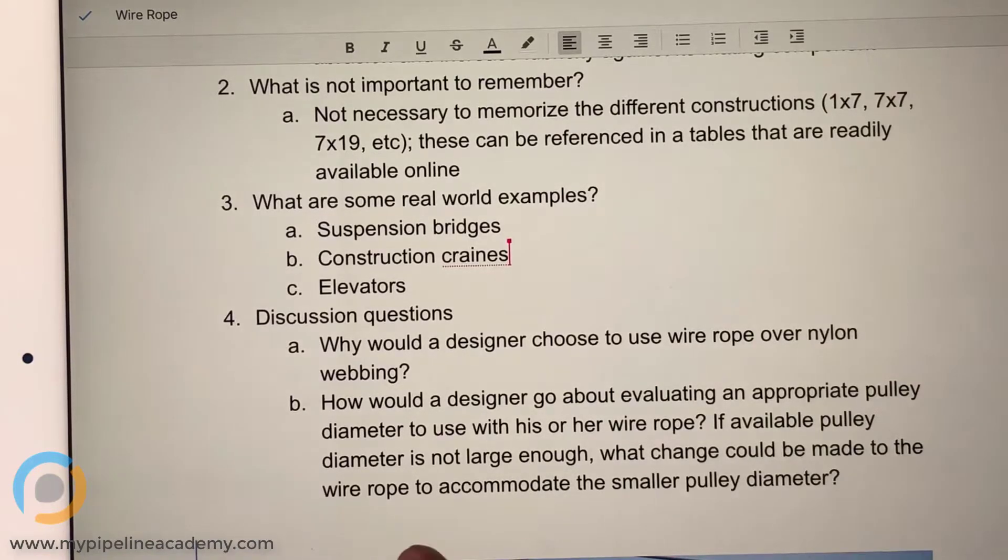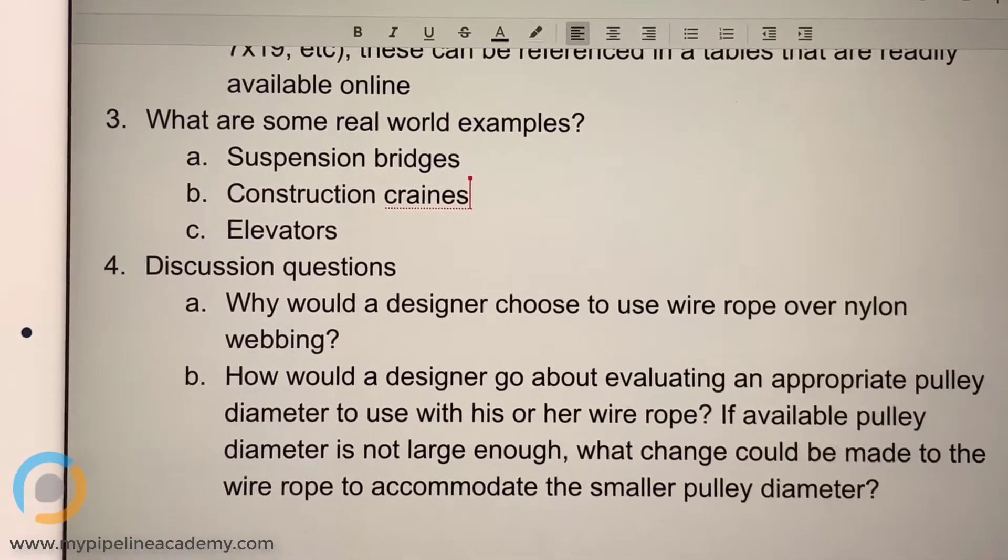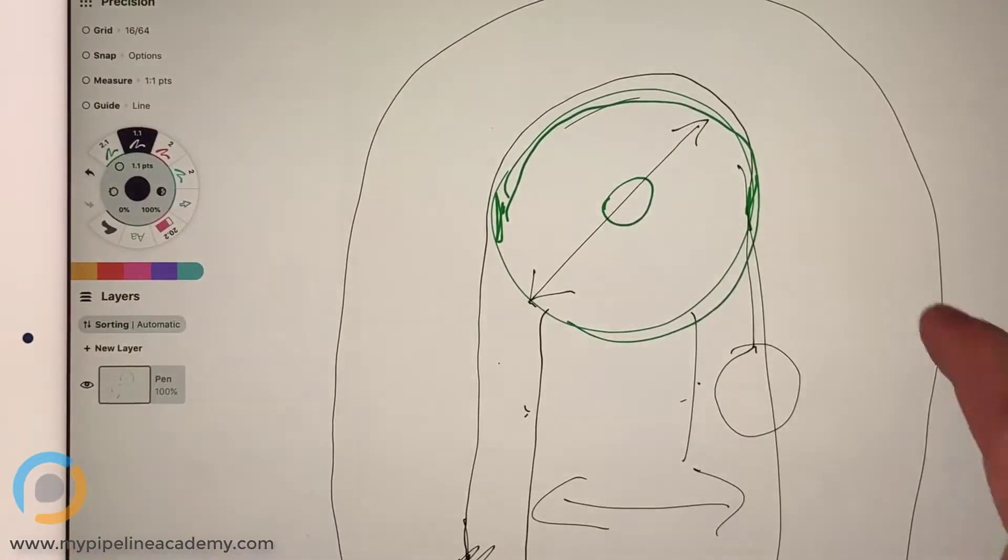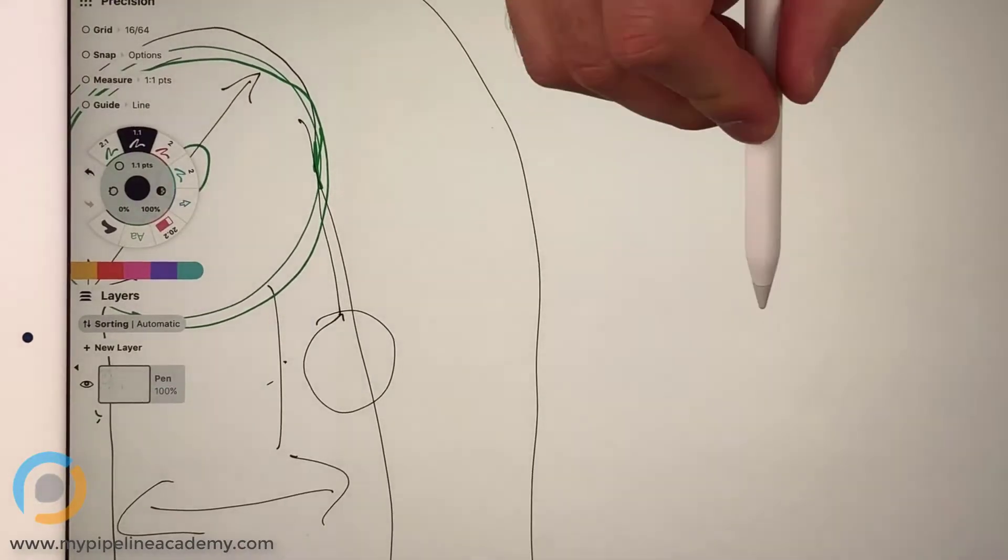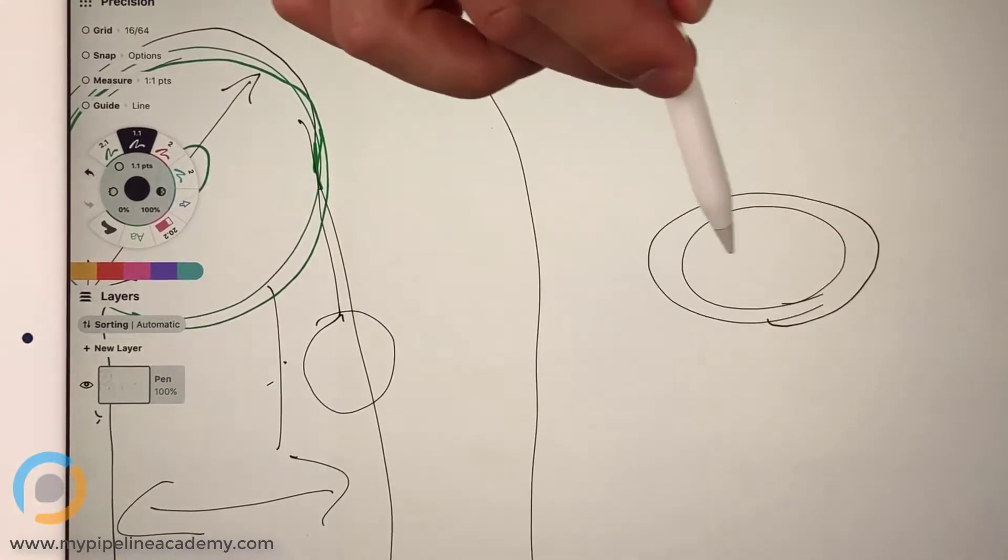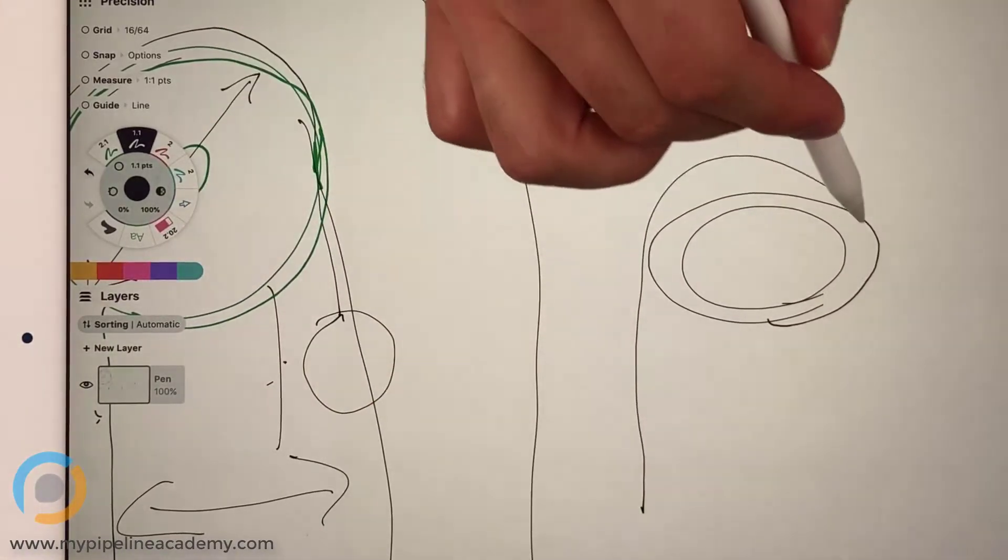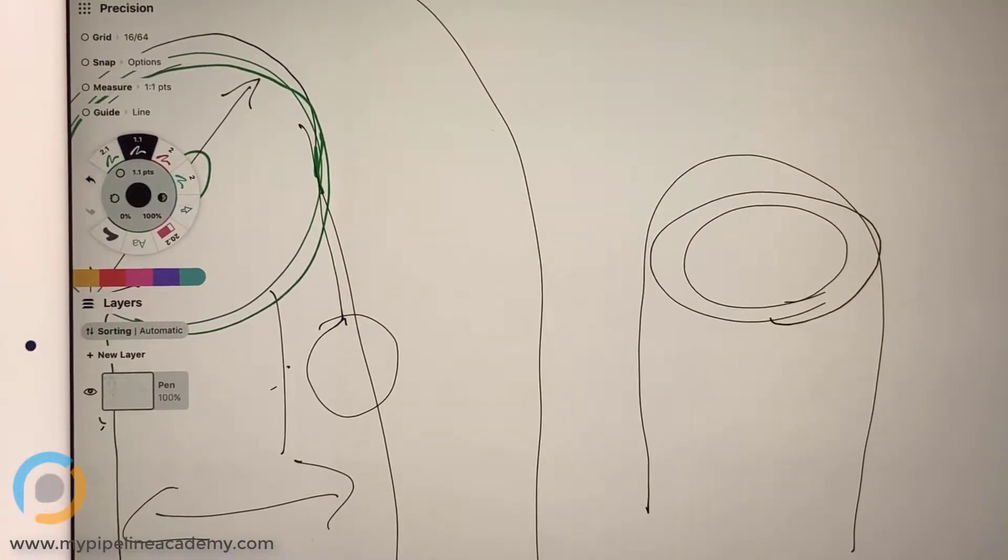If the available pulley diameter is not large enough, what change could be made to the wire rope to accommodate the smaller pulley diameter? Can we go back to the sketch? This is what I would do. I would, when we have the pulley and the rope, I would add something to the pulley so it makes it a diameter wider and then put the rope on it. That's an interesting idea. Yeah. You might be able to do something like that. You'd have to be really careful that whatever you add to that pulley doesn't change the performance of the pulley, but yeah, certainly conceptually that's something you could do.